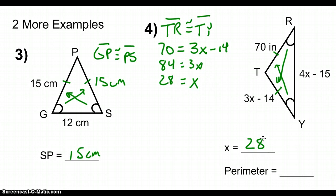Now, in order to find the perimeter of triangle TRY, we need to know the length of all three sides, and so we can verify that segment TY is going to be 70 inches by substituting in, so 3 times 28 minus 14 turns out to be 70. And then if we substitute in to find the length of RY, 4 times 28 minus 15, we see that the length of RY turns out to be 97.